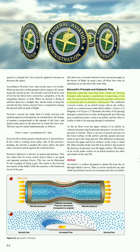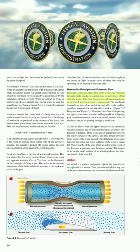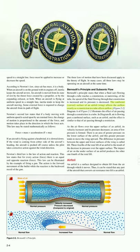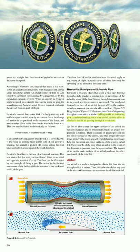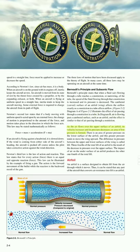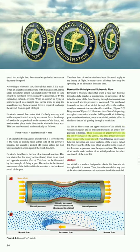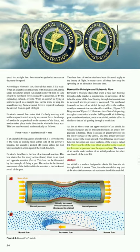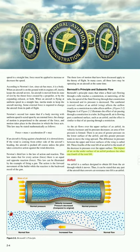Bernoulli's Principle and subsonic flow. Bernoulli's Principle states that when fluid air flowing through a tube reaches a constriction or narrowing of the tube, the speed of the fluid flowing through that constriction is increased and its pressure is decreased. The cambered, curved surface of an airfoil wing affects the airflow exactly as a constriction in the tube affects airflow. As the air flows over the upper surface of an airfoil, its velocity increases and its pressure decreases, forming an area of low pressure. There is an area of greater pressure on the lower surface of the airfoil, and this greater pressure tends to move the wing upward. The difference in pressure between the upper and lower surfaces of the wing is called lift. Three-fourths of the total lift of an airfoil is the result of the decrease in pressure over the upper surface.